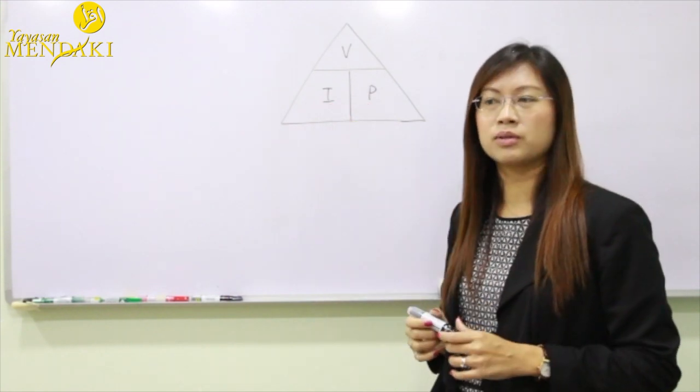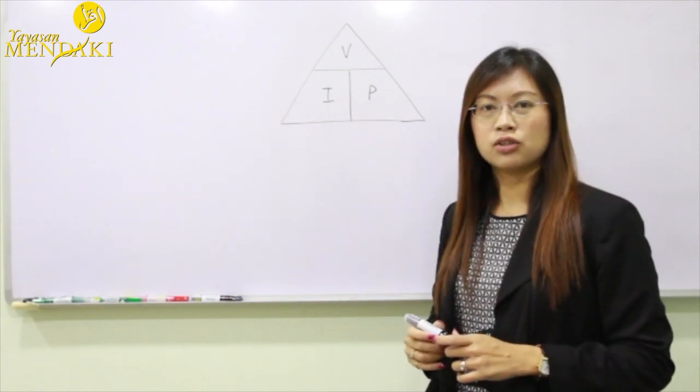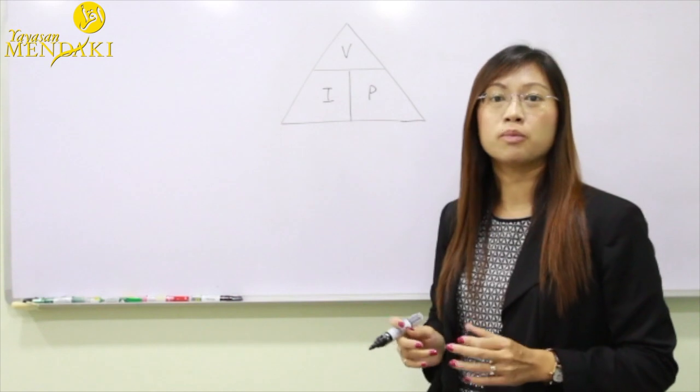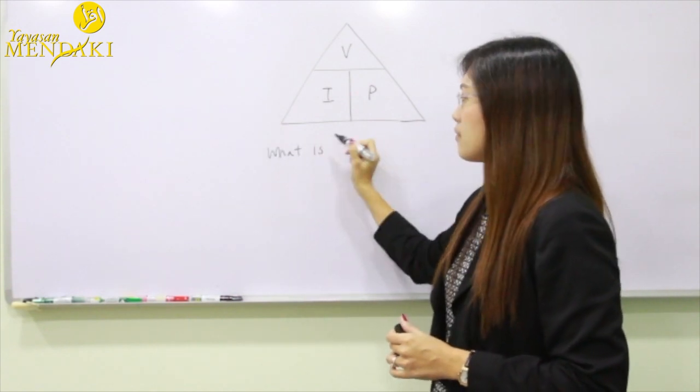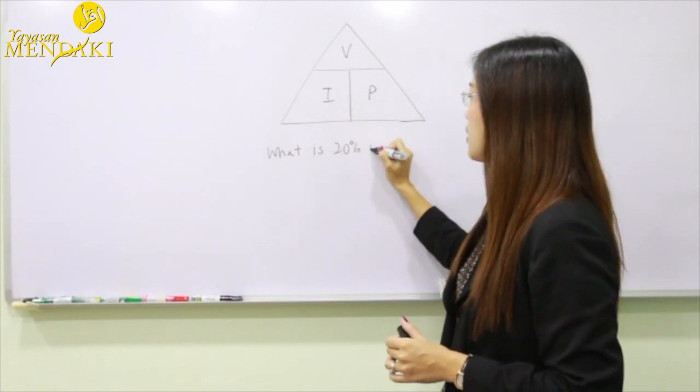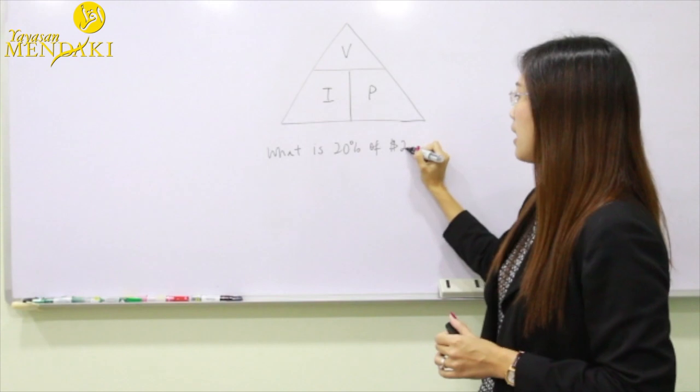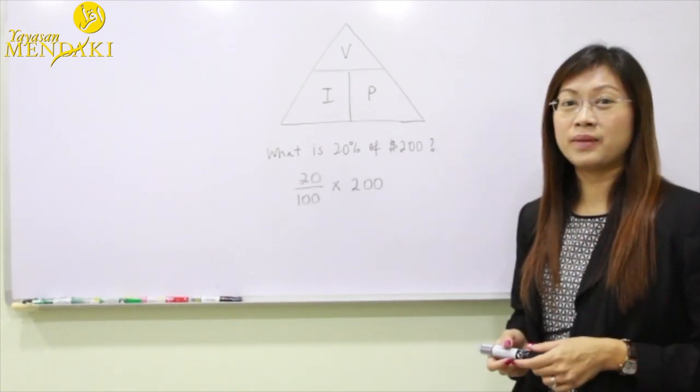So let's use an example to see how we shall apply this VIP method in solving simple percentage problems. First example: what is 20% of $200? Let's apply the VIP method.